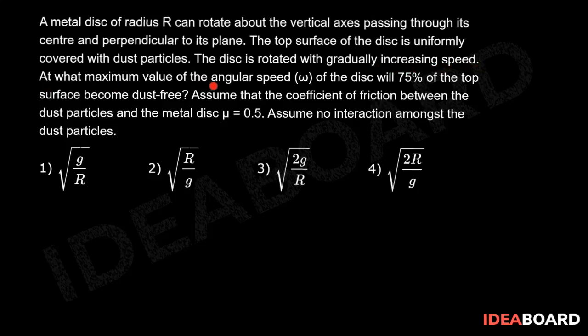At what maximum value of the angular speed omega of the disc will 75% of the top surface become dust-free? Assume that the coefficient of friction between the dust particles and the metal disc is 0.5. Assume no interaction among the dust particles.